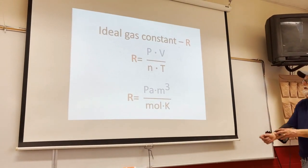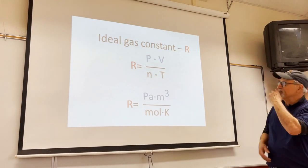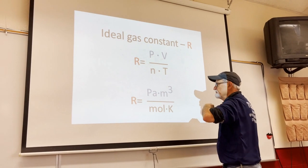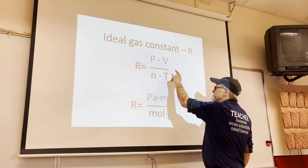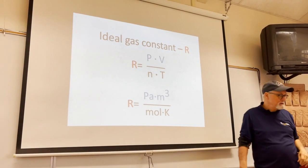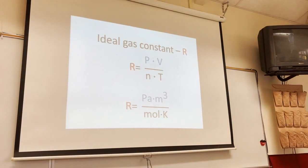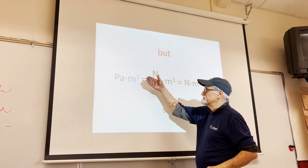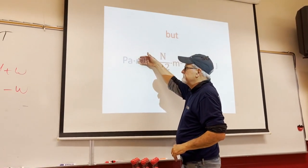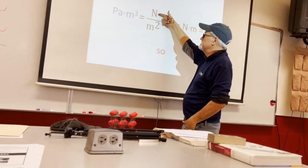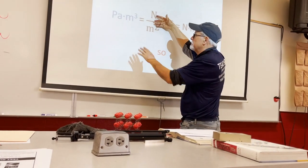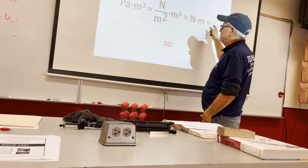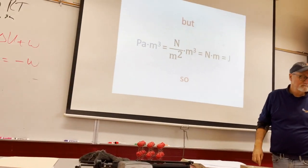Here's an interesting thing about the ideal gas constant. If you solve PV=nRT for R, you get PV over nT. Pressure is Pascals and volume is cubic meters. A Pascal is force over area — Newtons over meters squared — times cubic meters. So it's Newton-meters, which is joules.